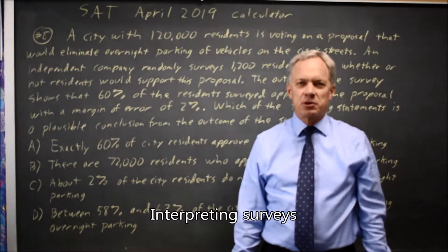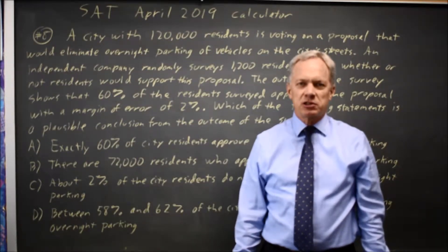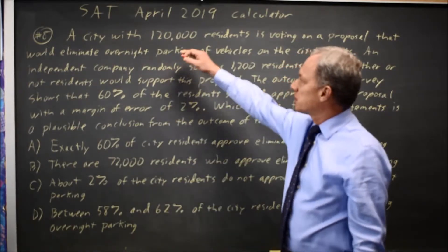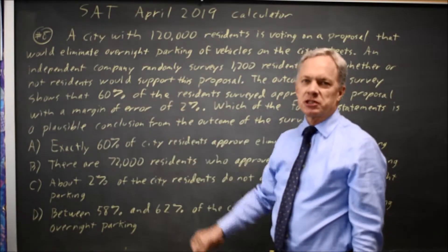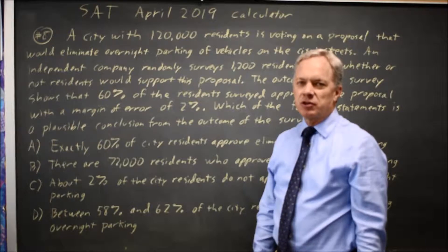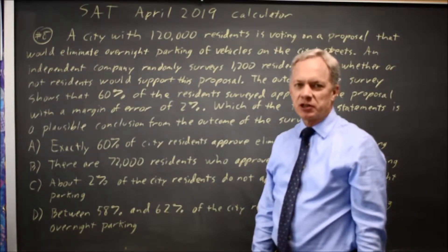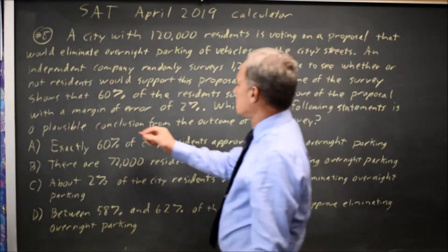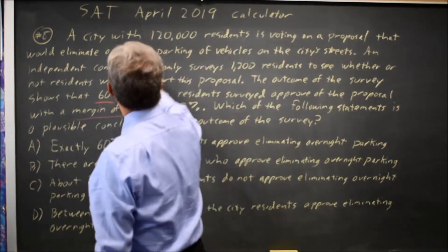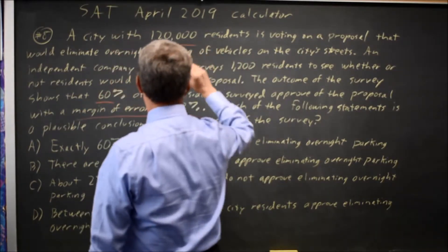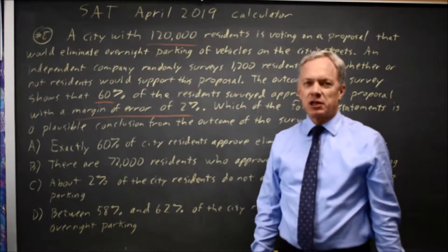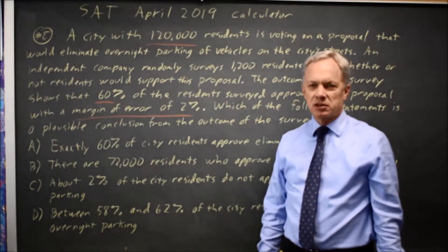This is calculator question number 8 from the April 2019 SAT. College Board describes a survey in a city with 120,000 people in which 60% of those surveyed support eliminating overnight parking, with a margin of error of 2%. The question asks which of the following is a plausible conclusion based on the survey.